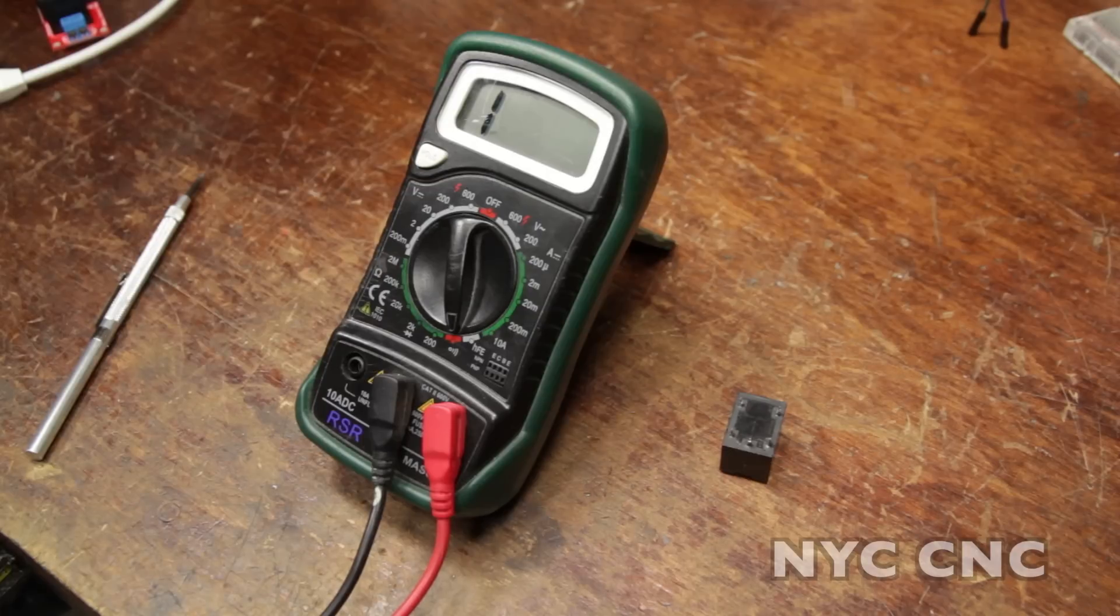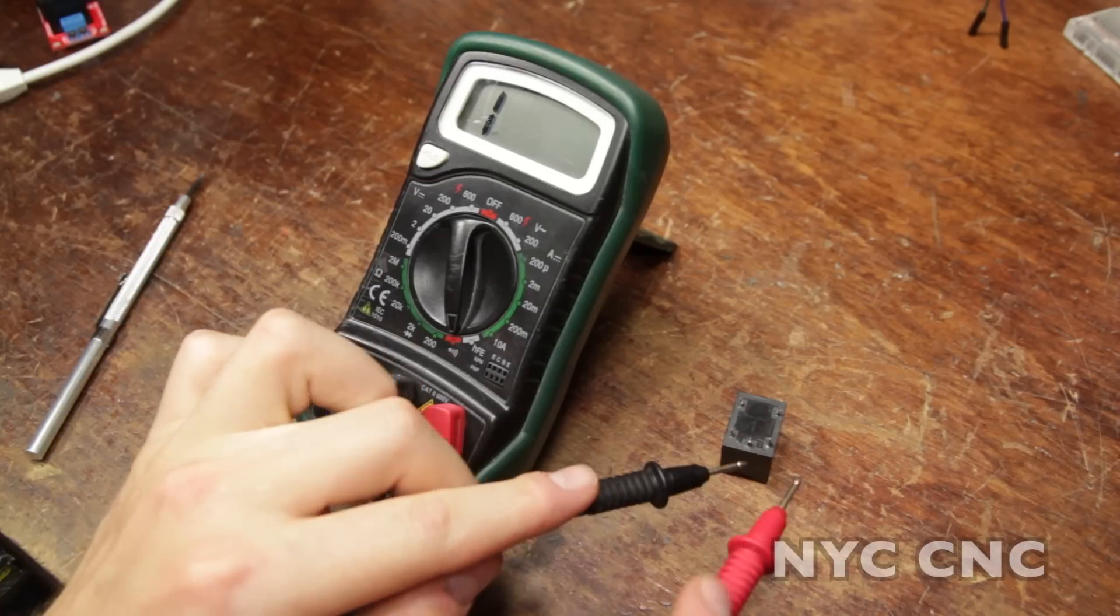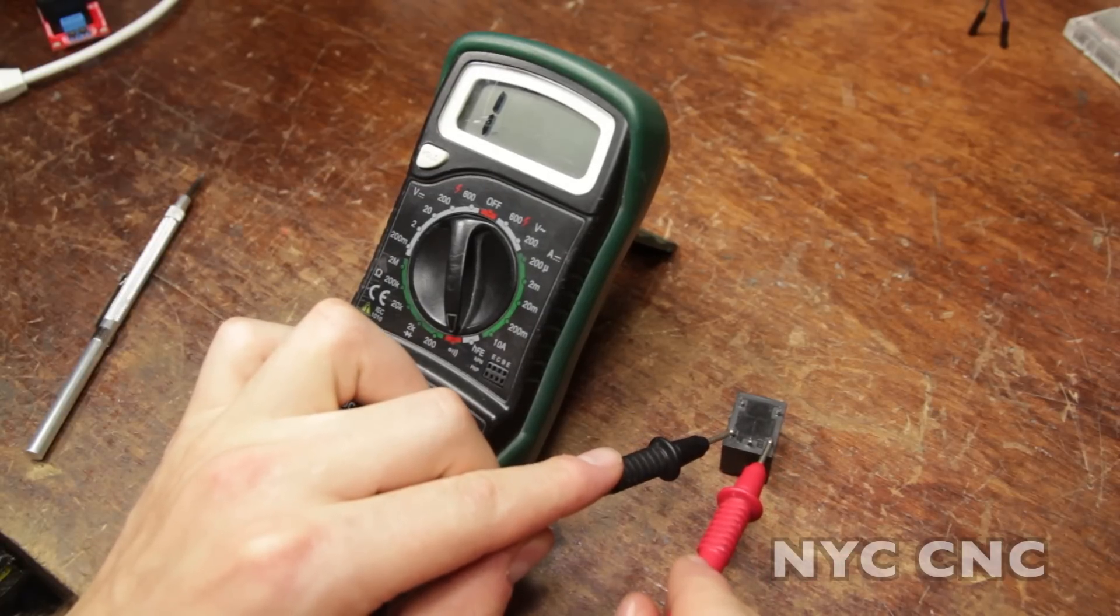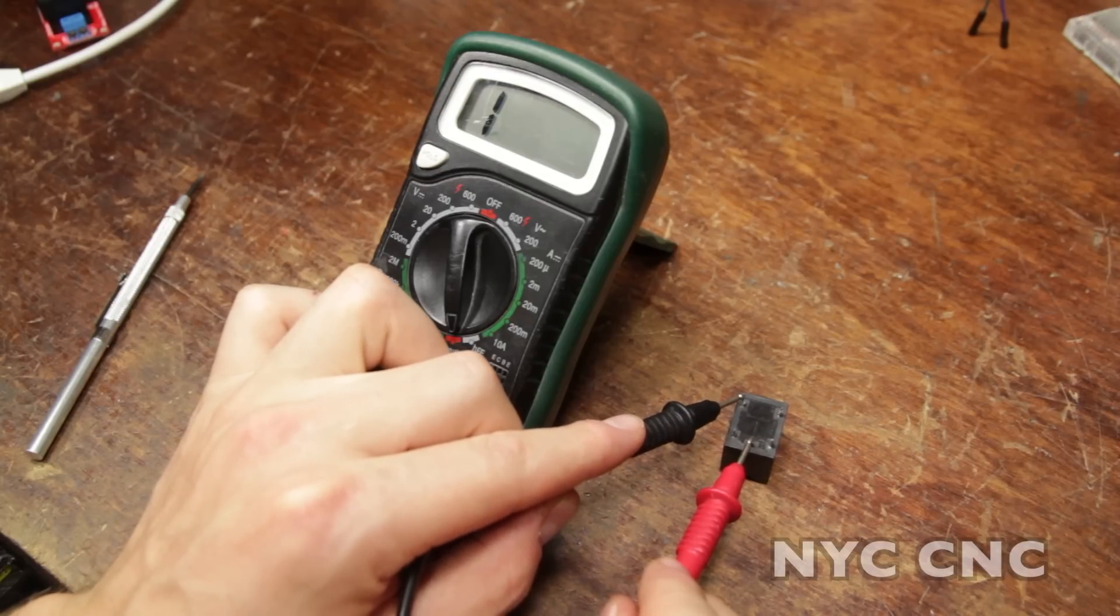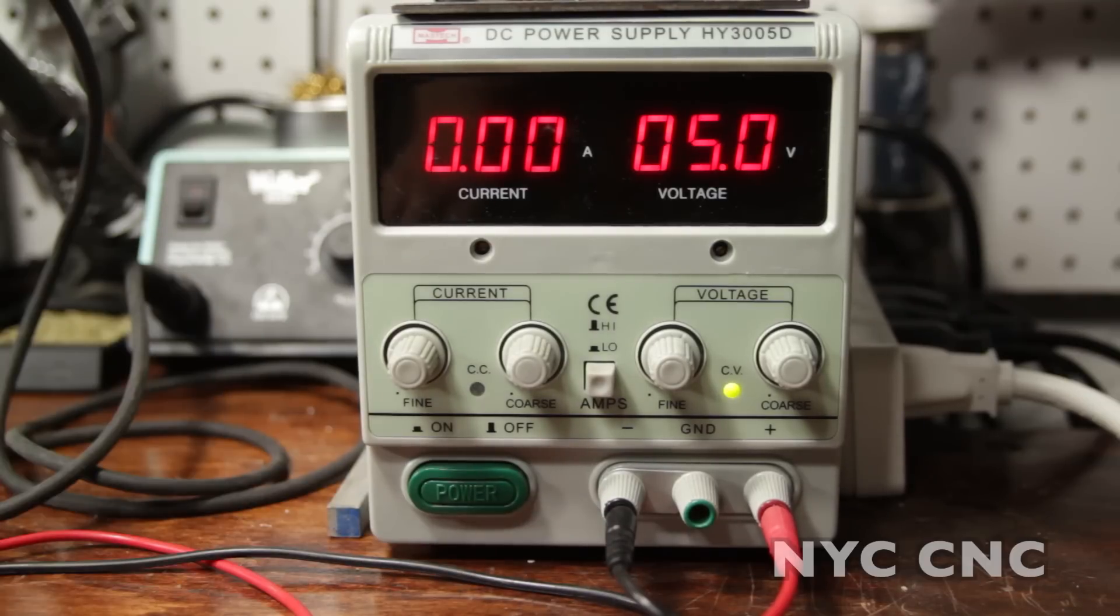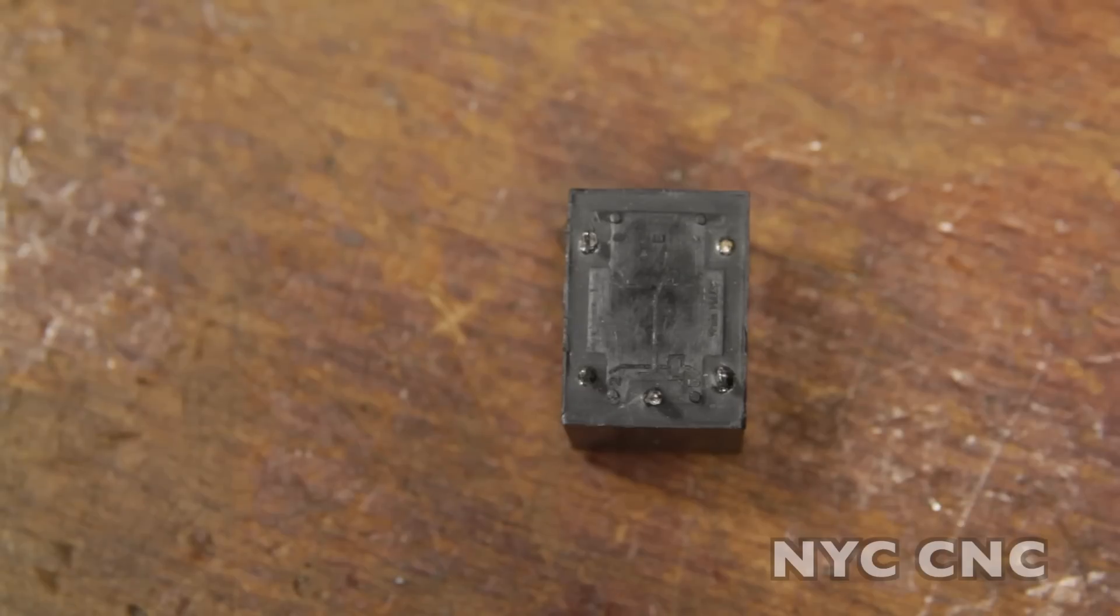A relay is another type of switch. When you put five volts across these two pins this pin will become connected to this pin. I've got my benchtop power supply set to five volts. I'm going to take the two leads and you'll see when I touch the two leads across the two pins you'll hear a click and that click is the connection closing.